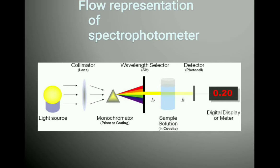Here we have the representation of a spectrophotometer. First, we have a light source. Then we have a lens. Then a monochromator — that is our prism or grating. Then a wavelength selector and slit. Then we have a sample solution in a cuvette. Then we have a detector — that is our photocell — and a digital display or meter.